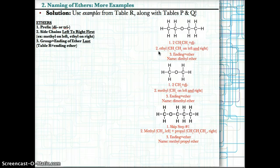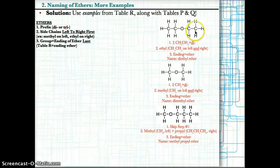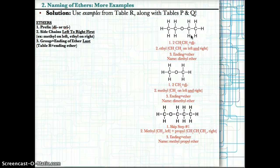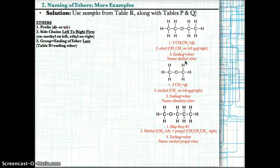Let's continue with naming ethers. Remember: use di or tri as a prefix if you have two or three of the same side chain, then name the side chains left to right, then add 'ether' last. In this example, we have CH3-CH2 on both sides — two of the same side chains, so we use the prefix di. Both are ethyl, so instead of saying ethyl-ethyl, we just say diethyl. The ending is ether because there's an O in the middle. The full name is diethylether.